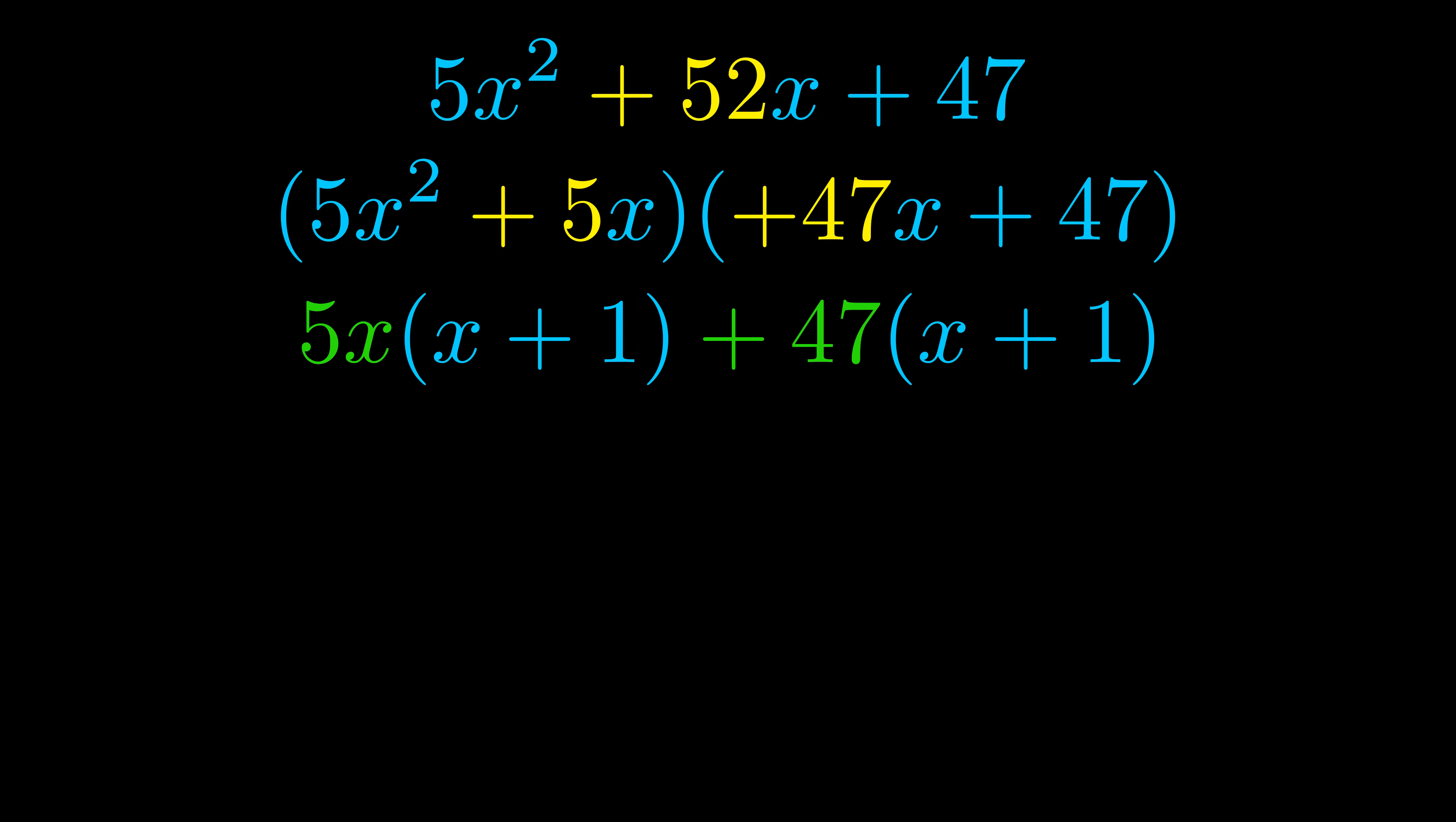Notice also how what remains inside the parentheses is the same in both cases. The blue values are the same. Those blue values will become one of our factors, and we will combine the two green values, the GCFs that we pulled out, to get the other one. And that is our fully factored equation.